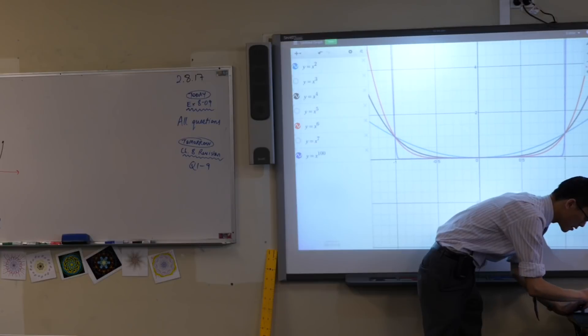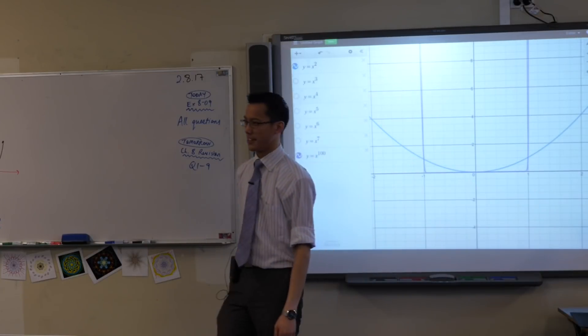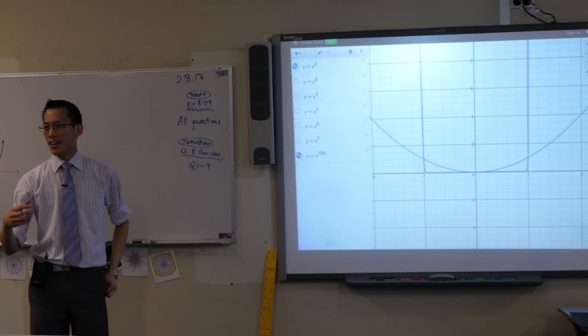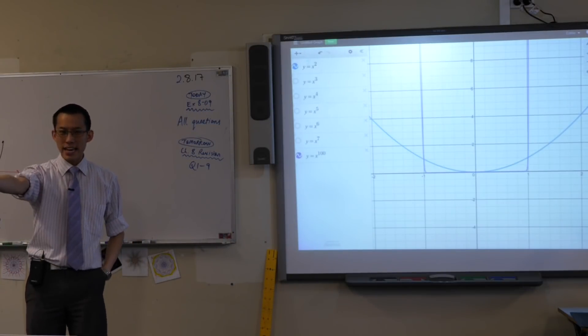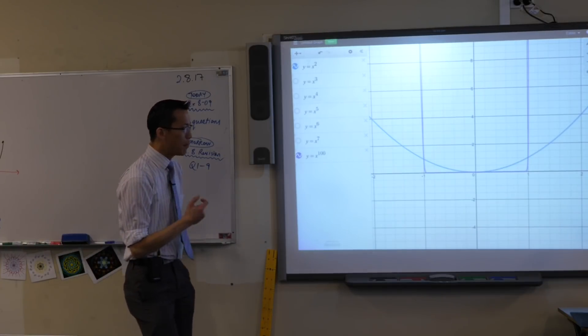Beautiful. Look at x to the 100. That looks weird, right? Now, I hope you recognize, yeah, it looks square or rectangular. But really what it is, is it's kind of like a parabola.